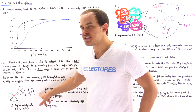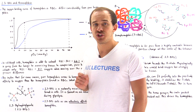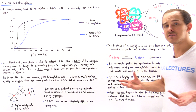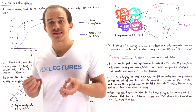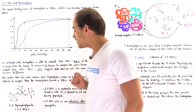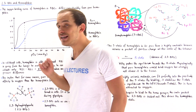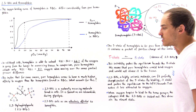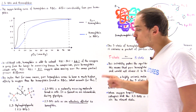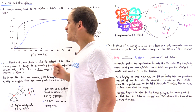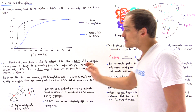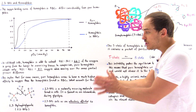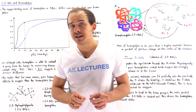The answer lies in this molecule: 2,3-BPG, or 2,3-biphosphoglycerate. This is a naturally occurring molecule found inside our cells and is an intermediate in the process of glycolysis. Notice that 2,3-BPG contains many negative charges — five in total — and that will be very important. It turns out that 2,3-BPG is precisely what creates this rightward shift in the oxygen binding curve, from the black curve to the blue curve. This molecule is an allosteric effector of hemoglobin.